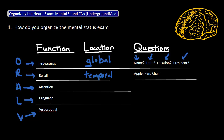The next brain function I like to assess is attention, which focuses on the frontal lobe. A good test for this is to ask the patient to state the months of the year backwards.